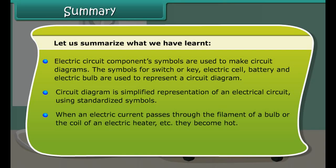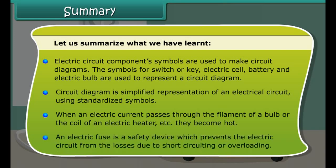Let us summarize what we have learned. Electric circuit component symbols are used to make circuit diagrams. The symbols for switch or key, electric cell, battery, and electric bulb are used to represent a circuit diagram. A circuit diagram is a simplified representation of an electrical circuit using standardized symbols. When an electric current passes through the filament of a bulb or the coil of an electrical heater, they become hot. An electric fuse is a safety device which prevents the electric circuit from losses due to short circuiting or overloading.